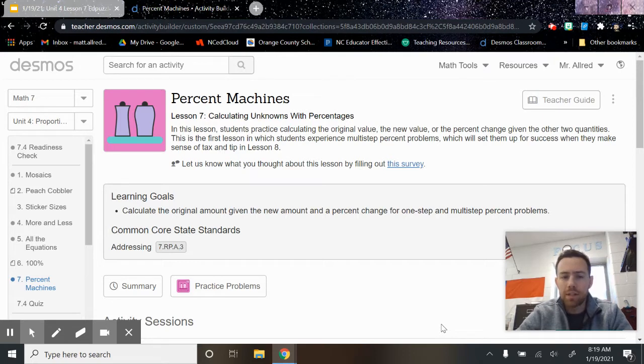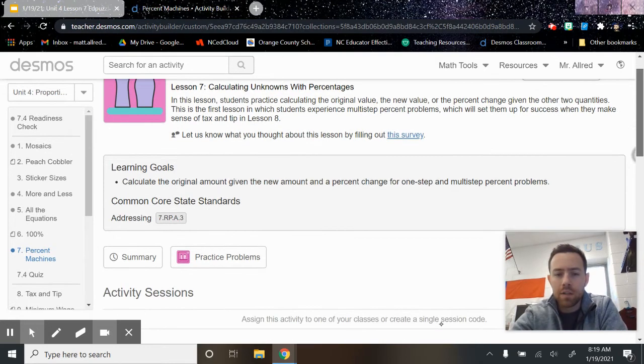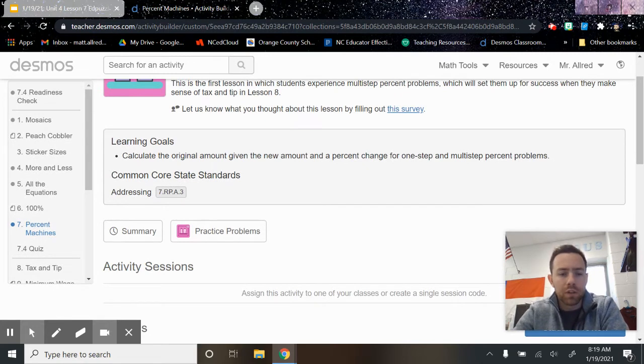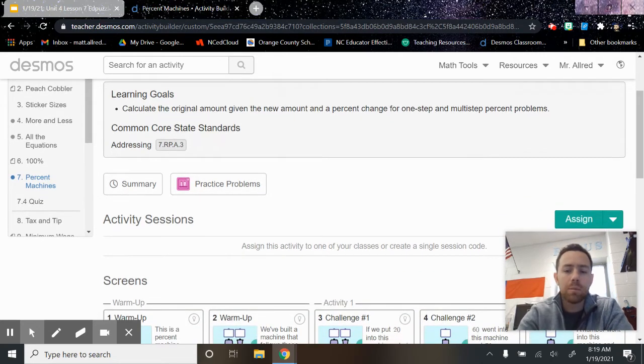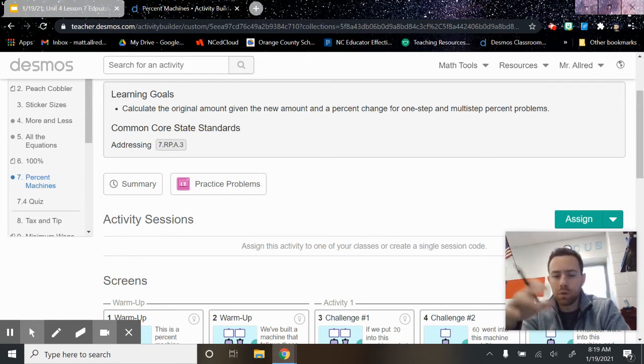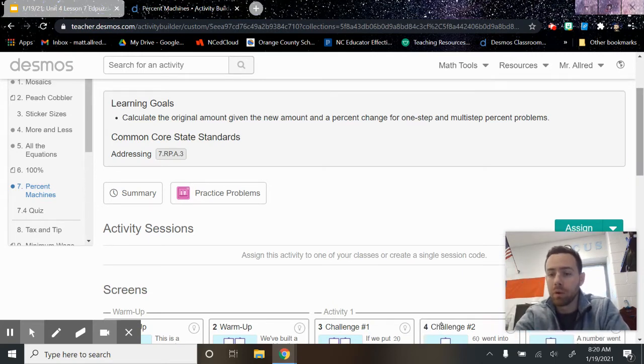In this lesson, you'll practice calculating the original value, new value, or the percent of change when given the two other quantities. It's going to be pretty awesome. The big learning goal for this lesson is that you should be able to calculate the original amount given the new amount and a percent of change for one step and multi-step percent problems. So it's all about working with the original value, the new value, and the percentage of increase or decrease and being able to find one of those components when you're only given the other two components.